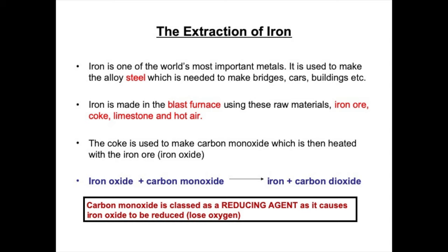Before we talk in detail about how this process works, let's discuss some of these raw materials. Iron ore is our source of iron and the ore used to extract iron is called hematite. Coke is a form of carbon used in the process as a fuel because we need a lot of heat in a blast furnace — temperatures around 1500 degrees C. Burning coke releases a lot of heat and it's also used to make carbon monoxide, which is the reducing agent in this process.